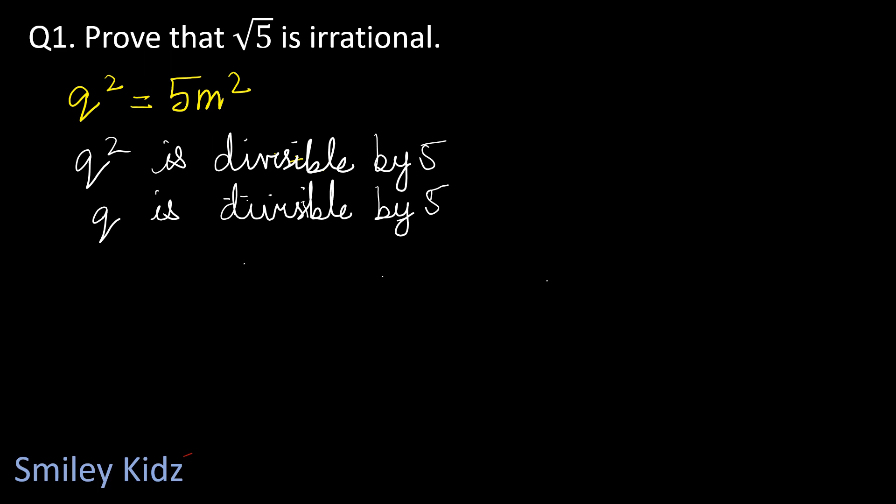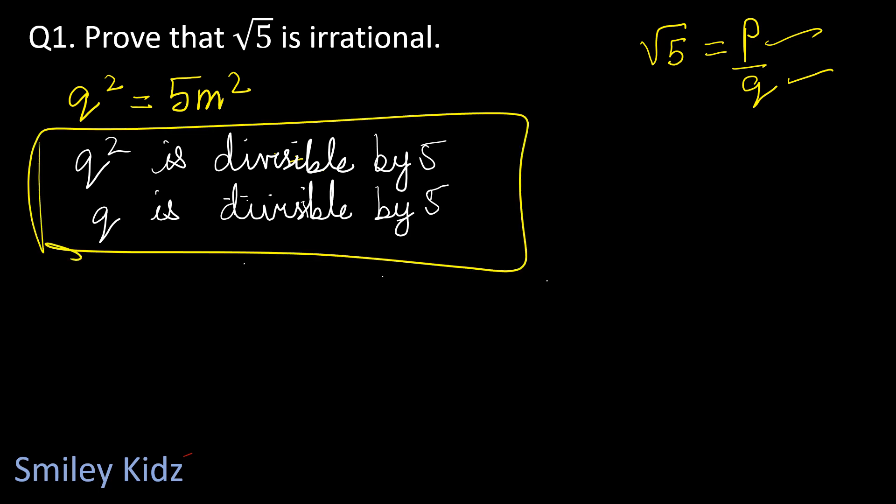We established that root 5 is written as p by q where p and q are co-prime numbers. But we found that both p and q are divisible by 5, meaning they have 5 as a common factor. This contradicts the fact that p and q are co-prime. Hence, our assumption that root 5 is rational is false, and root 5 is an irrational number.